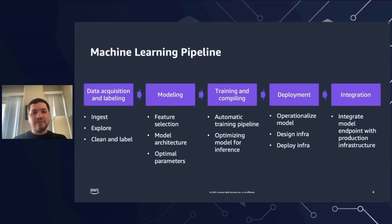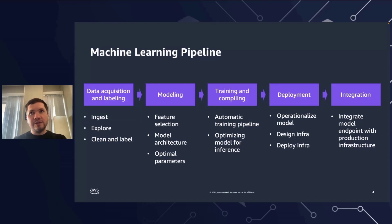Let's start with the machine learning pipeline. Here you can see the whole pipeline if you want to deploy machine learning into production. You start with data acquisition and labeling, then you build the model itself. After that, you build the training pipeline where you train the model and prepare it for inference. After that, you deploy the model and organize infrastructure for it. And finally, you integrate your model into your production infrastructure.